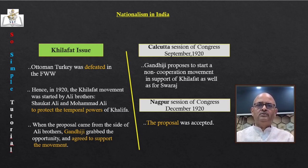Women responded in a big way to Gandhiji's call for Civil Disobedience Movement, seeing service to the nation as a sacred duty. During the salt march, thousands of women came out of their homes. They participated in protest marches, manufactured salt, picketed foreign cloth and liquor shops. Many women went to jail. Those coming from rural areas belonged to rich peasant households, while those from urban areas were mostly from high-caste families.